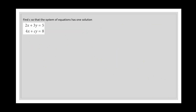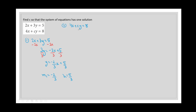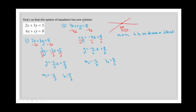For the last question, we find constant c so the system has one solution. Equation 1: subtract 2x from both sides and divide by 3 — slope is negative 2/3 and y-intercept is the constant term. Equation 2: subtract 4x from both sides and divide by c — slope is negative 4 over c and y-intercept is 8 over c. For one solution, the slopes must be different, so we work with an inequality.